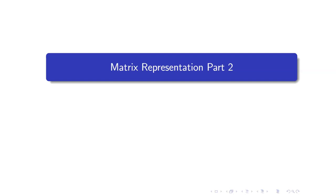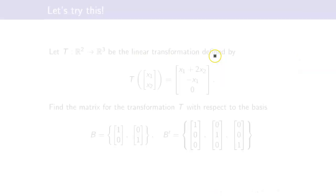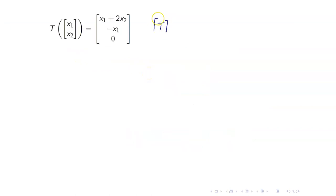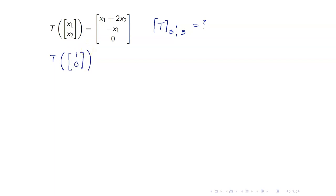In this lesson, I am going to discuss matrix representations with respect to bases that are no longer the standard ordered bases. Suppose that we have this linear transformation from R2 to R3. Let us first get its matrix representation with respect to the standard bases of R2 and R3. We are getting the matrix representation from B to B'. In order to do that, we have to get first the images of the basis elements of R2.